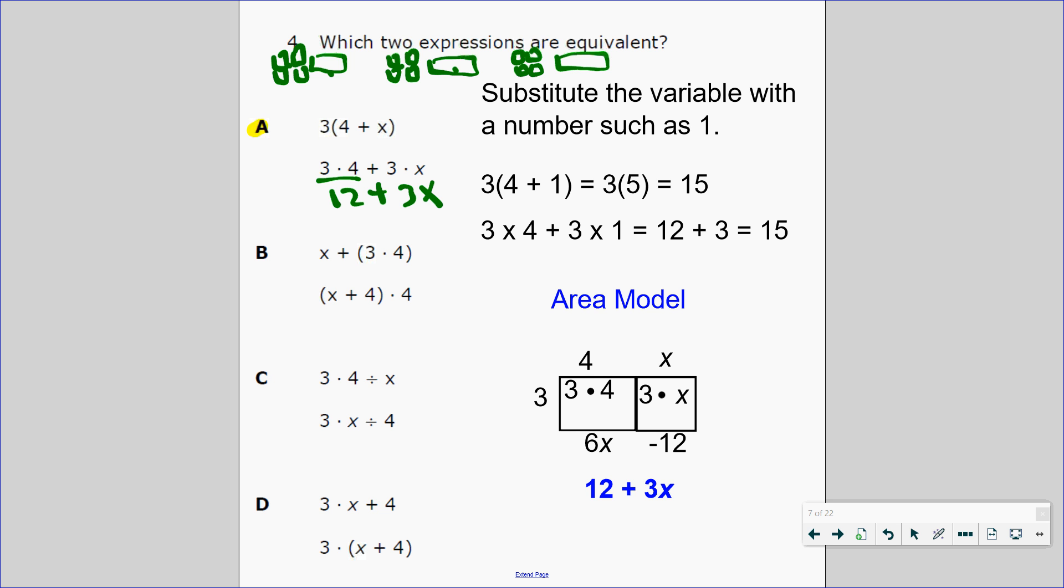But maybe you prefer the area model because it's faster. So here's the area model: it's three groups of 4, which is 3 times 4, and then three groups of x is 3 times x. Hold up, this is wrong. This should be 12 plus 3x. I'm going to fix that up, sorry about that. I apologize for that. That is wrong. So this is the only one that's correct.